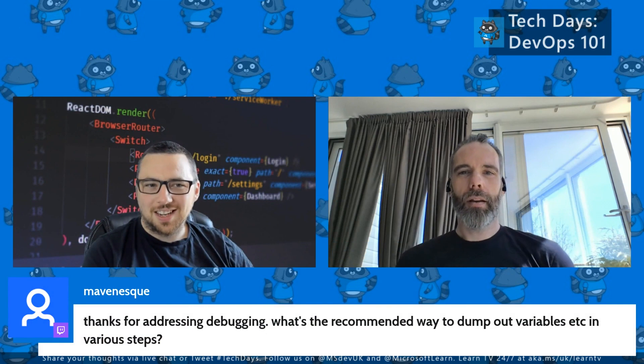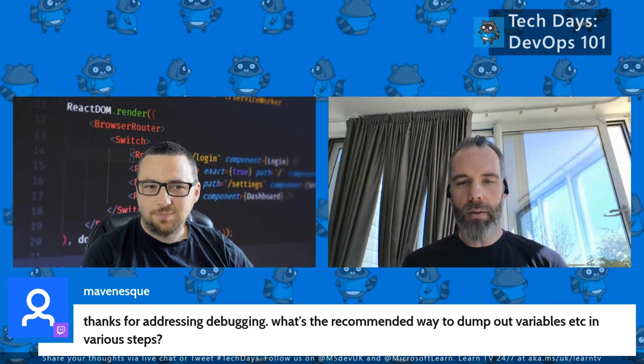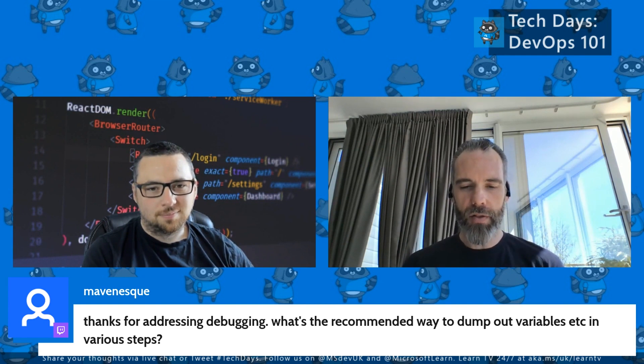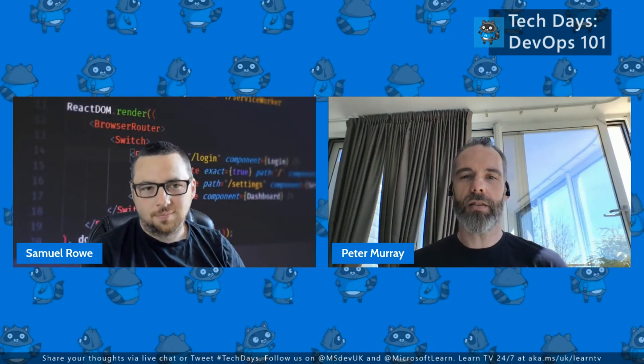For dumping variables during debugging, you have a few options: echo them using Bash, use PowerShell, or use actions/github-script which gives you access to core.info and core.error for logging. GitHub Script also lets you do if-conditions and other logic — effectively a cut-down Actions environment as if you've written your own action step, embeddable and executable as needed.